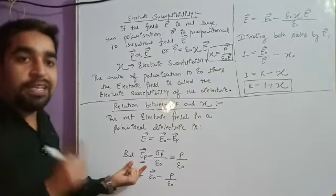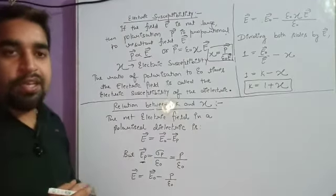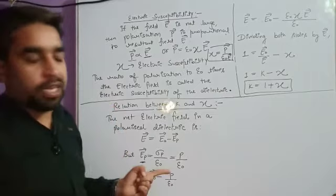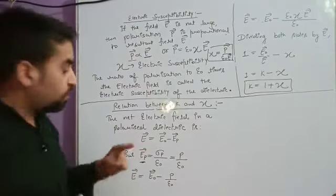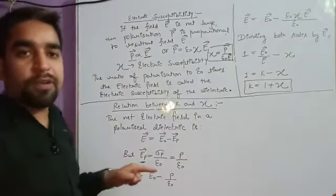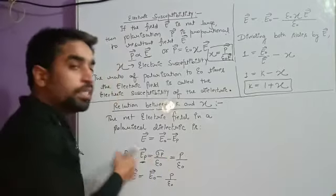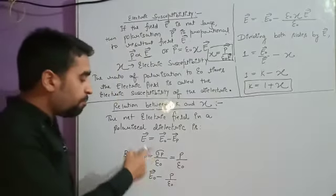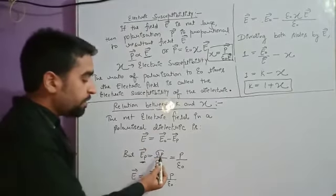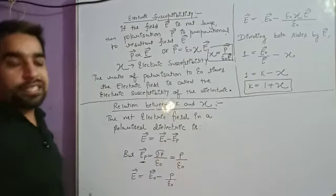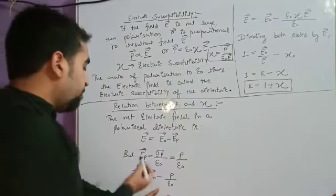By application of Gauss's theorem, for a plate the electric field Ep equals σp divided by ε₀. This plate acquires charge due to polarization, so Ep = σp / ε₀, where σp is the surface charge density. In the previous derivation, it was proved that charge density is numerically equal to polarization density, so σp is replaced by polarization density P.